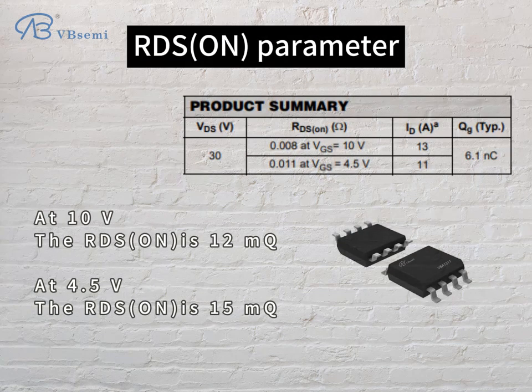For the RDS(on) parameter: at 10V gate voltage, the RDS(on) is 12mΩ; at 4.5V, the RDS(on) is 15mΩ.